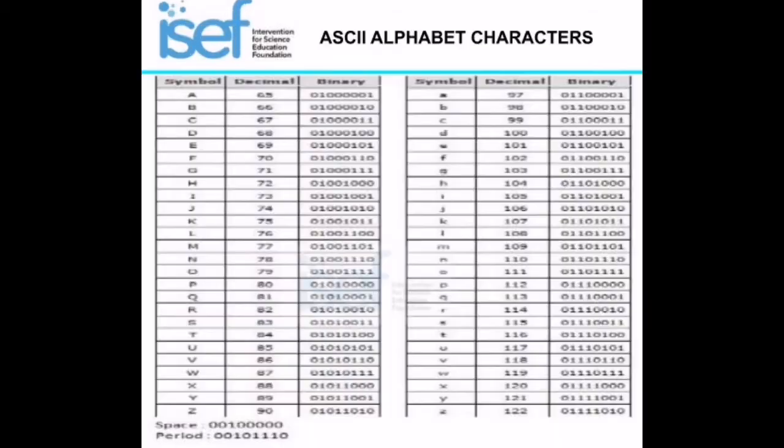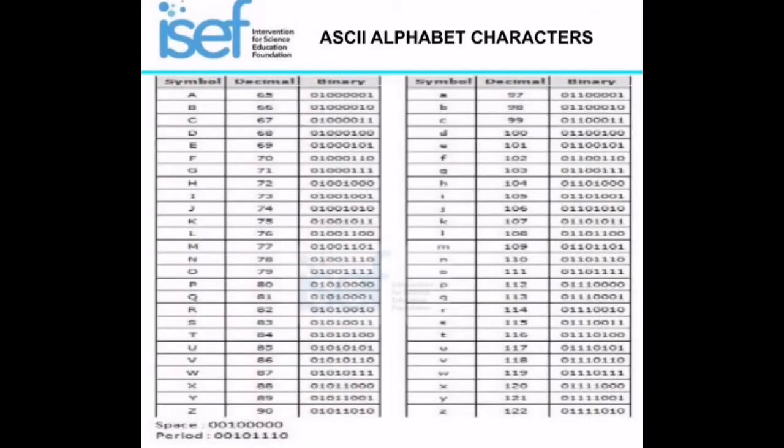Now, let's look at the ASCII code. ASCII stands for American Standard Code for Information Interchange. It is a system of coding text so it can be processed by computers. Every letter of the alphabet has an ASCII code, which is made up of ones and zeros.